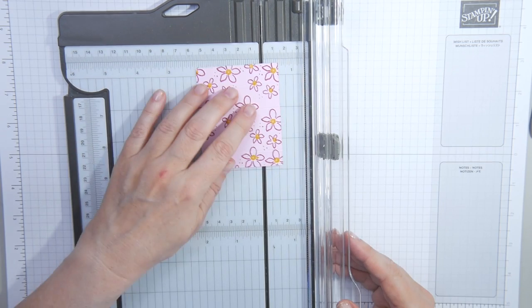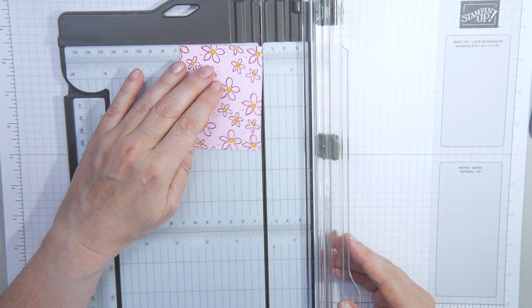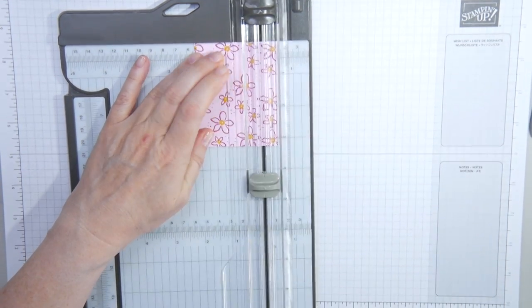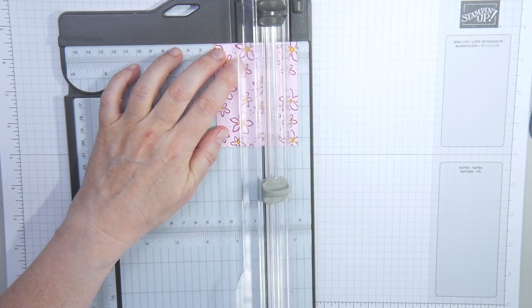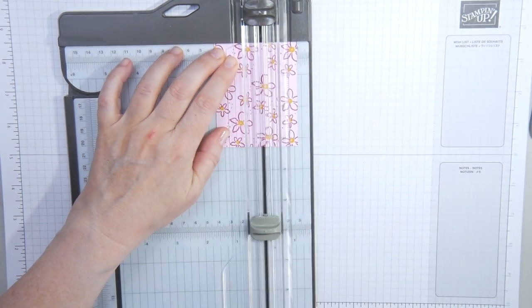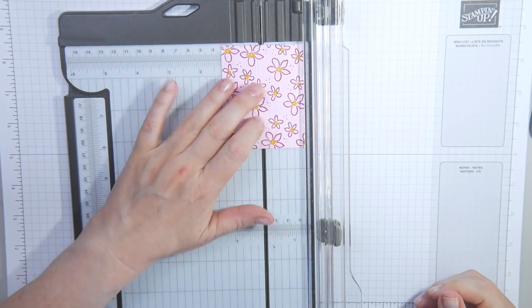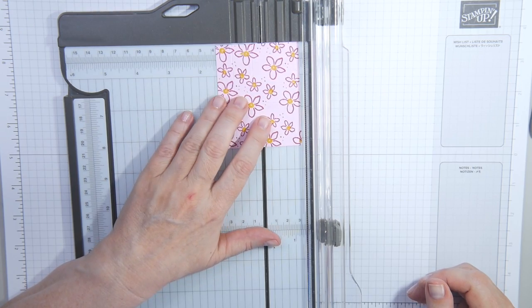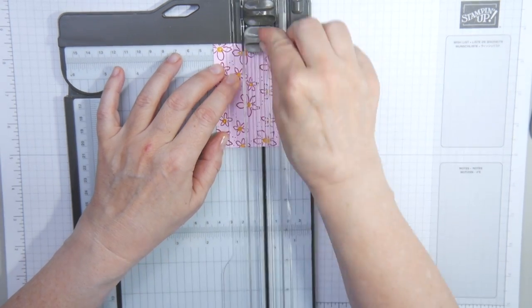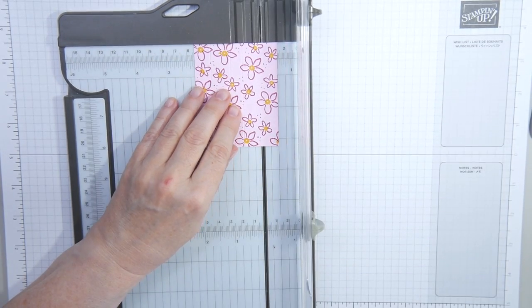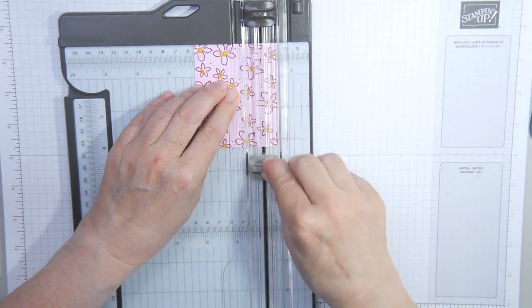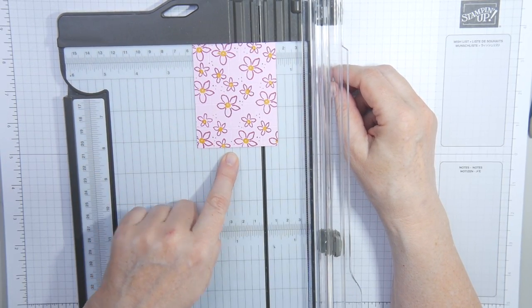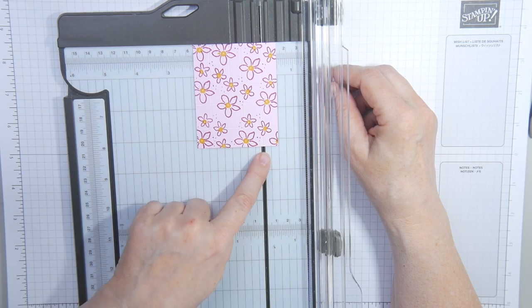Then the shorter side top, you score at half an inch, 1 1⁄8, 1 1⁄2, and 2 1⁄8. And in centimeters, that is 1.2, 2.8, 3.8 and 5.4 centimeters.